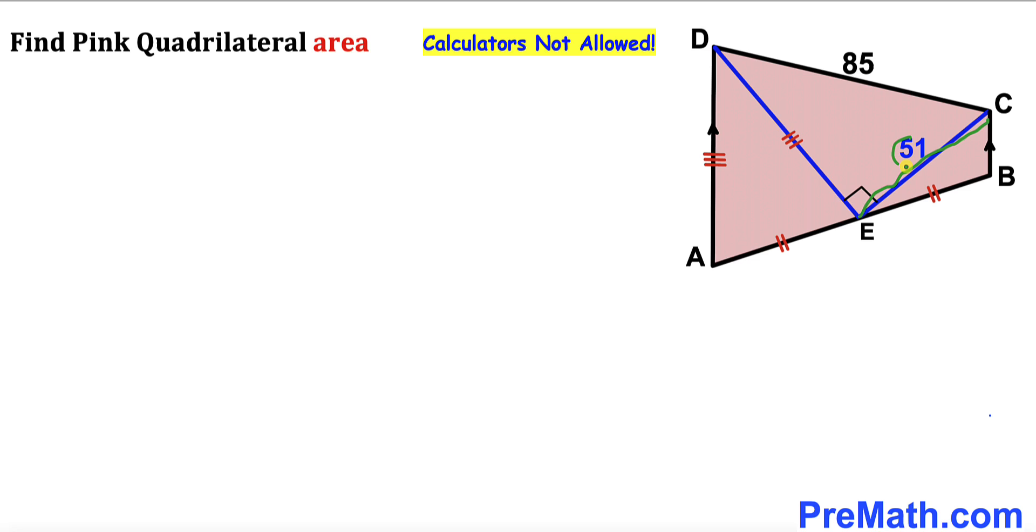Its side length EC is 51 units whereas its side length CD is 85 units. And moreover this segment EB is going to be equal to this segment AE. In other words, E is the midpoint on this line AB.